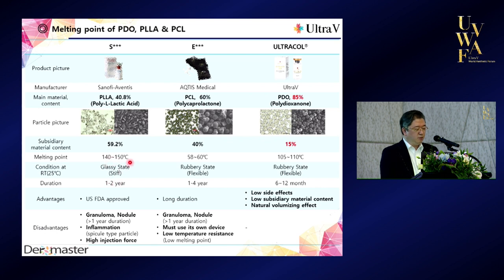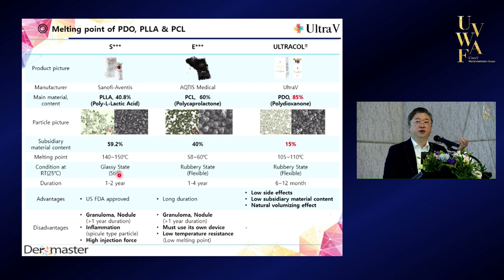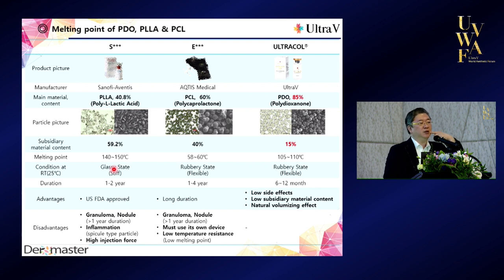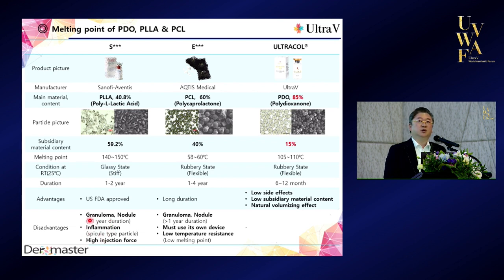Sculptra/PLA has a melting point of 140 to 150 degrees. In normal room temperature the characteristic of this material is very stiff and hard. In Korea we have had Sculptra experience for over eight years — whenever you inject it more than three, four, five times, many patients come and tell me their skin feels very stiff. This happened many times with thin-skin patients. Sculptra also has a longer lasting absorption period of one and a half to two years.